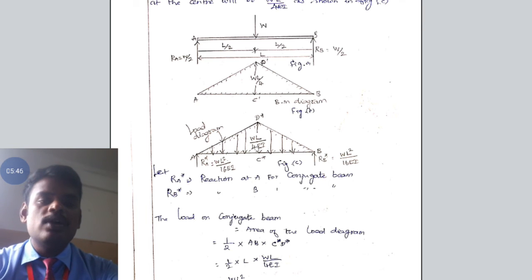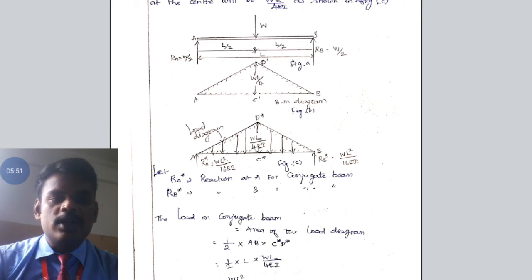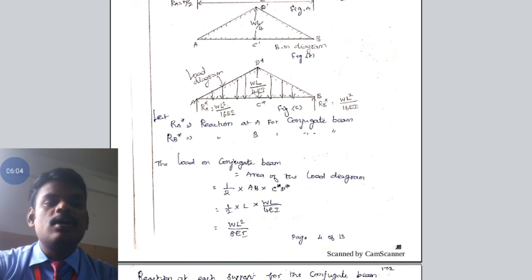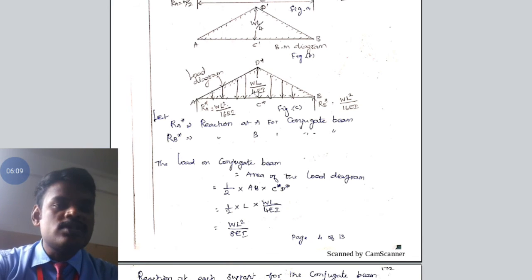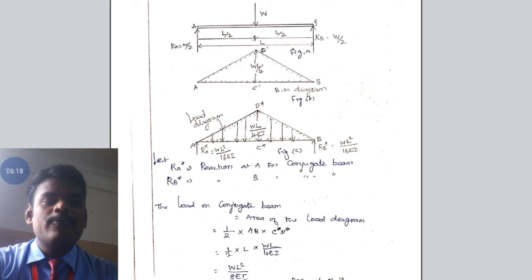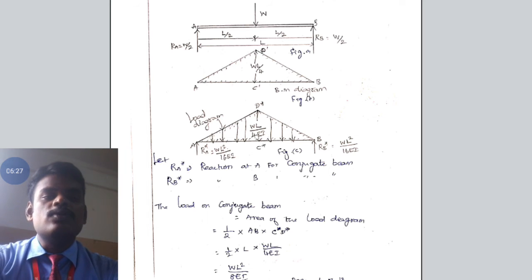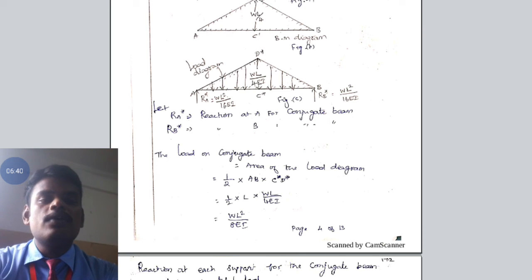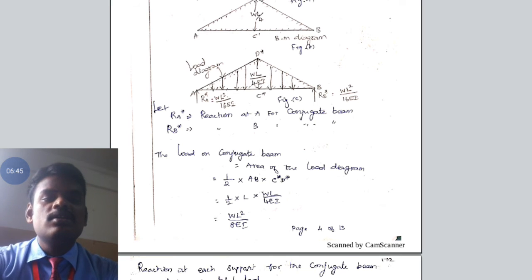The load value of the conjugate beam at the mid portion is WL divided by 4EI. By calculating the support reaction — since it is a simply supported beam carrying a central point load — half of the load is transferred to each support. The original beam's reactions are denoted RA and RB, and the conjugate beam's reactions are denoted RA* and RB*. The total load value is WL divided by 4EI, so RA* equals RB* equals WL² divided by 16EI.